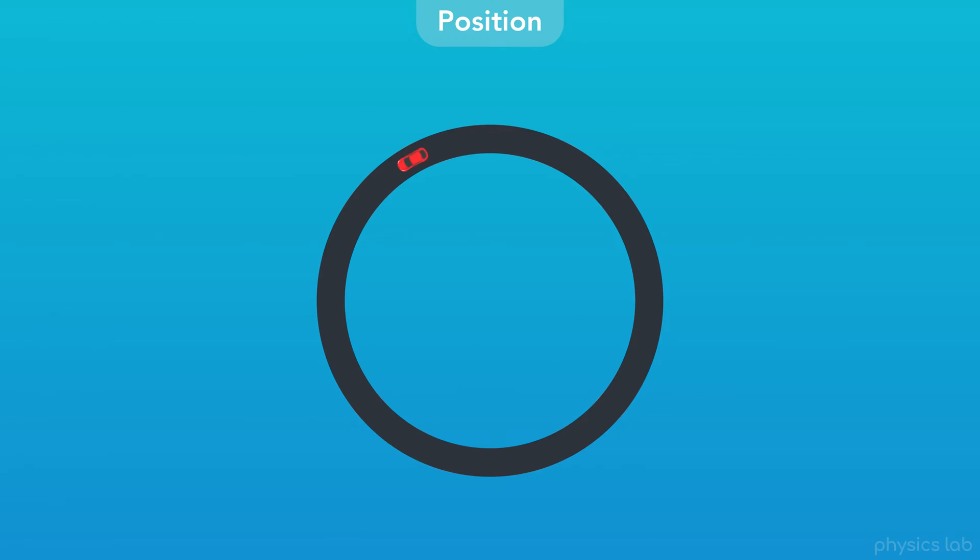For this video, we'll use a car driving around a circular track as our example for circular motion. How can we describe the position of the car as it moves?